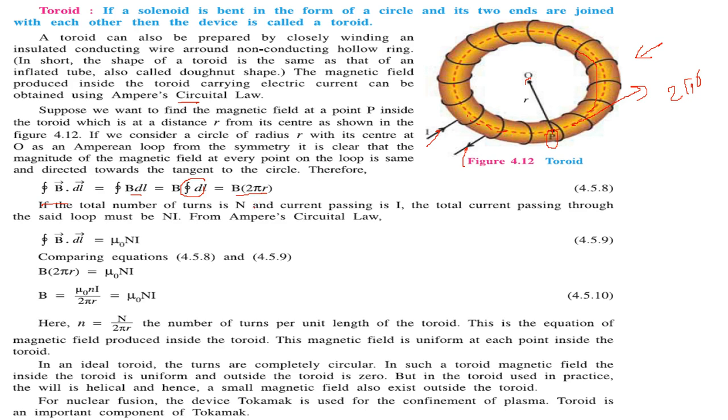If the total number of turns is capital N and current passing is I, then the total current passing through can be said as N into I because there are N turns. Using Ampere's circuit law, B dot dl will be equal to μ₀ into NI. When we compare these two, we get: